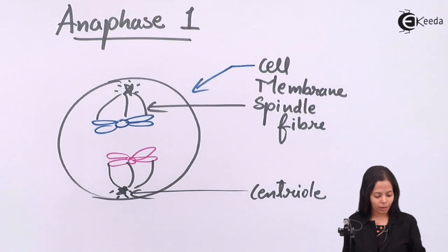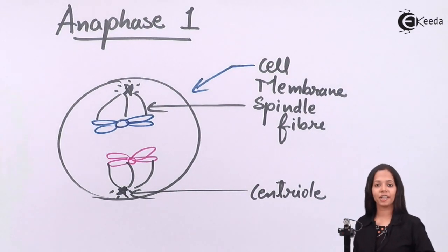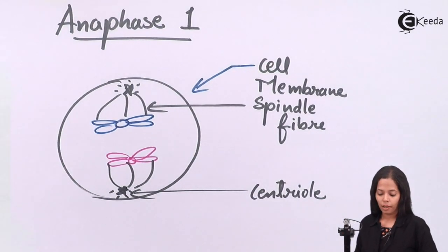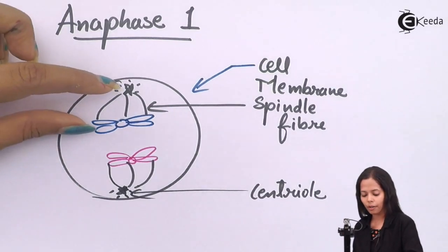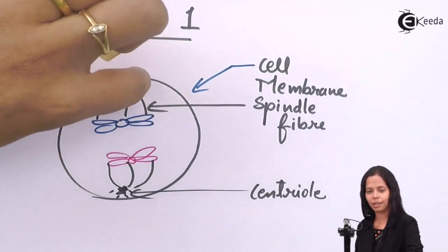Observe anaphase one carefully, because next we are going to study telophase one. What is the significance of the spindle fiber here? The spindle fiber contracts, and that's why the chromosome is getting pulled towards the polar region.